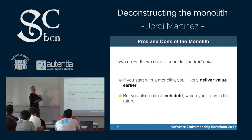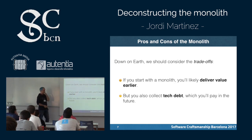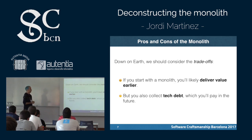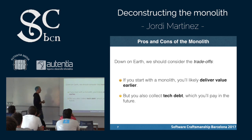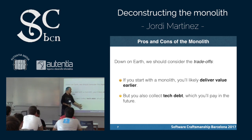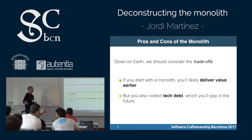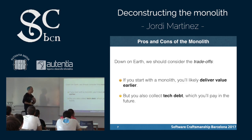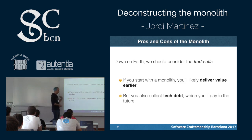You always have trade-offs — there's nothing that is completely positive. If you start with a monolith, you'll likely deliver value earlier, because one simple application, which is supposed to be simple to develop, deploy, and run, offers all the value you want to provide. But you are also collecting tech debt if you are thinking of a potential deconstruction into services in the future. Any reason you think you would have to decouple the system later, and you are not doing it now, is tech debt you will need to pay — in time, in people, or in money.